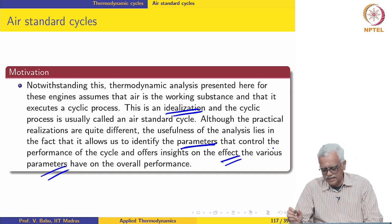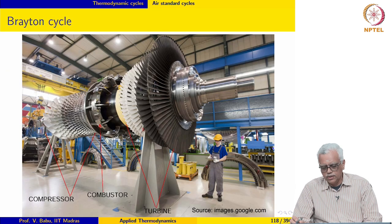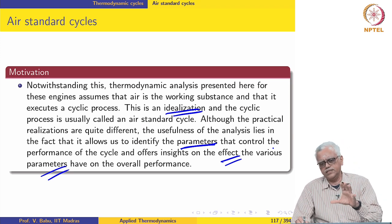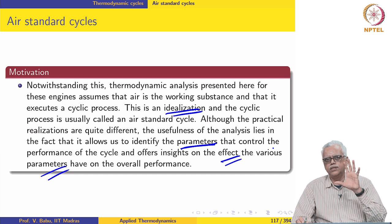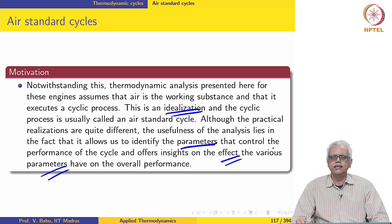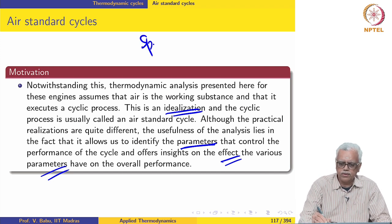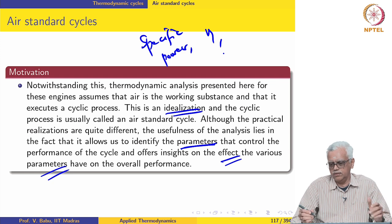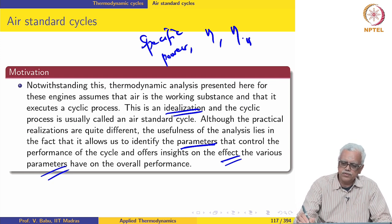That is the motivation for doing air standard cycles. We start with the gas turbine engine first, then spark ignition, and then the compression ignition engine. In all these cases, the performance metrics for the air standard cycle are the same as what we used in the Rankine cycle: specific power, first law efficiency based on energy, and second law efficiency.